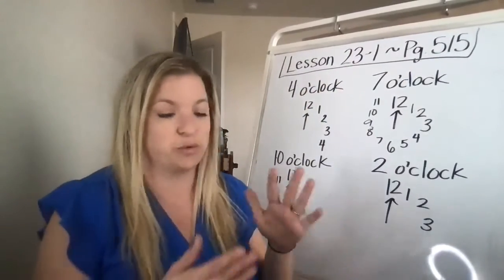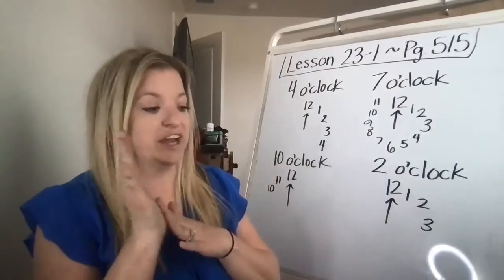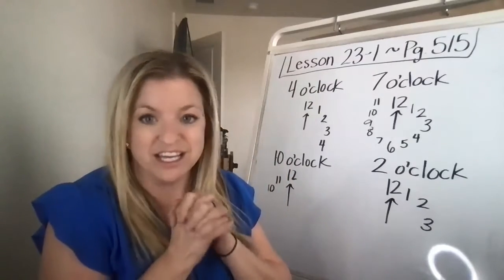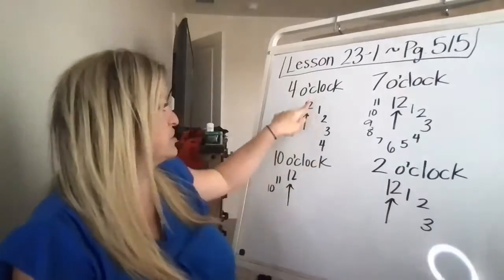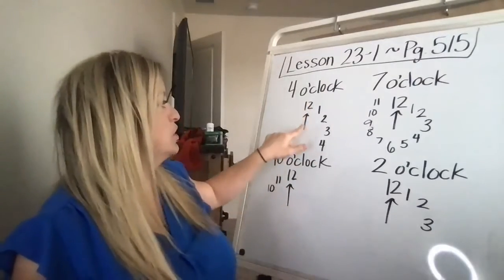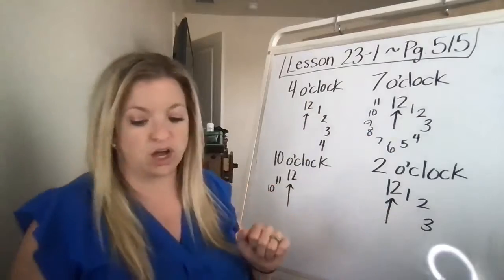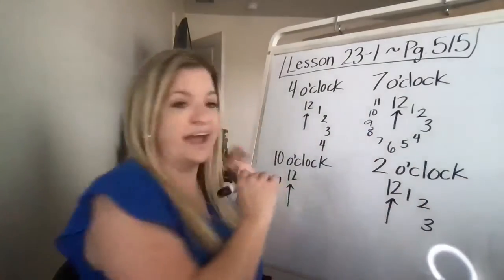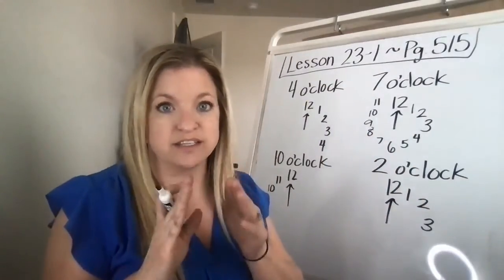And all we're doing is starting with o'clock. So when the long hand, which is the minute hand, is facing or pointing to the 12, that means it is o'clock. The long hand is the minute and the short hand is the hour.